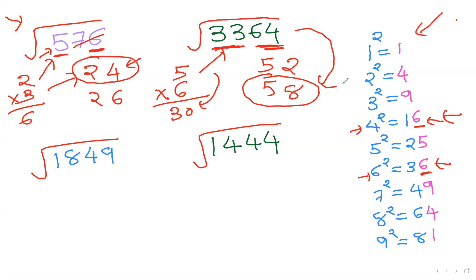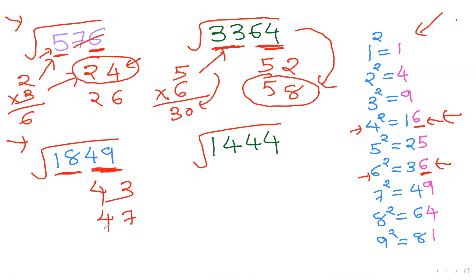Next example: last digit is 9, so 3² = 9, meaning the last digit is 3, or 10 − 3 = 7. Remove the last two digits, leaving 18. 4² = 16, 5² = 25 — too big, so use 4. Possible answers: 43 or 47. Multiply 4 × 5 = 20. Our leftover 18 is smaller than 20, so choose the smaller answer: 43.